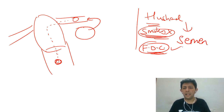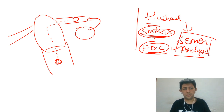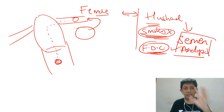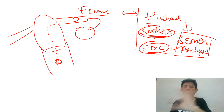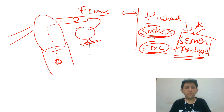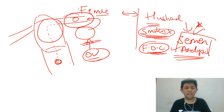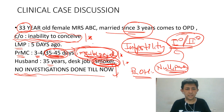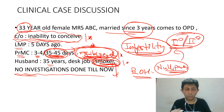In the examination, always investigate both partners simultaneously — don't investigate only the female. Semen analysis for the husband is the most basic and first investigation. If normal, advise stopping smoking and little else may be needed. For the female, we need to rule out ovarian factor, evaluate the fallopian tubes, and evaluate the uterus — addressing ovarian factor, tubal factor, and uterine factor as potential causes of infertility.